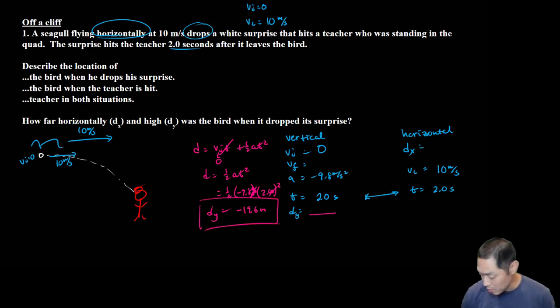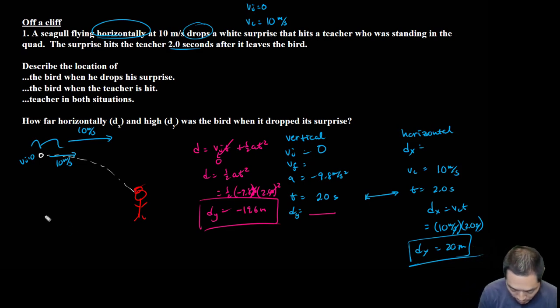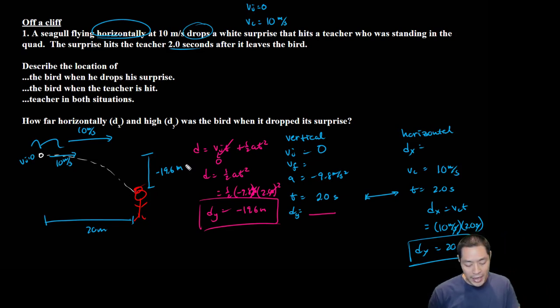So dy is negative 19.6 meters. The other one's fairly straightforward as well. dx equals vct, so 10 meters per second times 2.0 seconds equals 20 meters. From the bird dropping to here is 20 meters, and the height it drops is 19.6 meters. That's the first problem, fairly straightforward. The main idea is when you see horizontal moving at horizontal speed, then we know that is vc. When we're talking about bombers, it'll be the same exact setup.